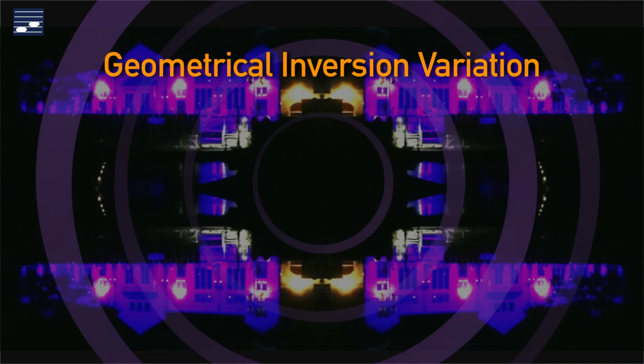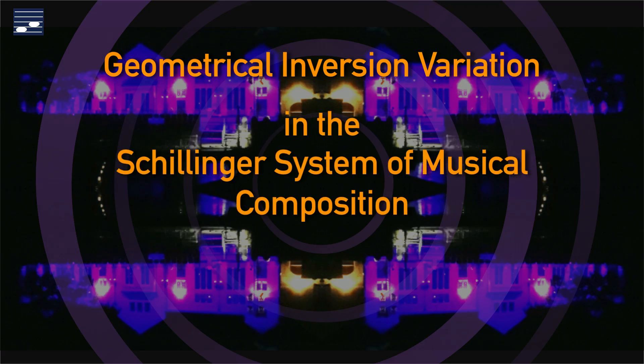Hello. This video tutorial is about variation technique through geometrical inversions, as discussed in the Schillinger system of musical composition. In the first episode we look at the modification of an original melody using the inversion, retrograde, and retrograde inversion variation forms.